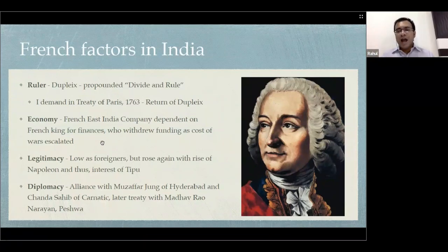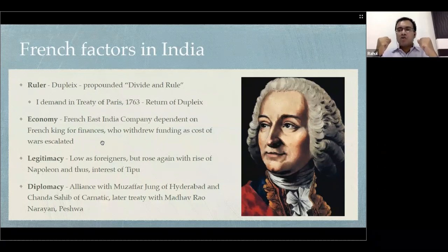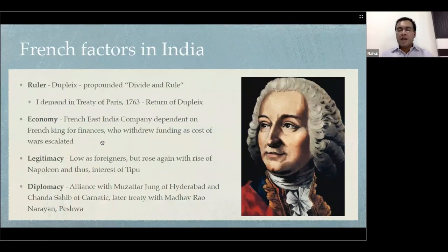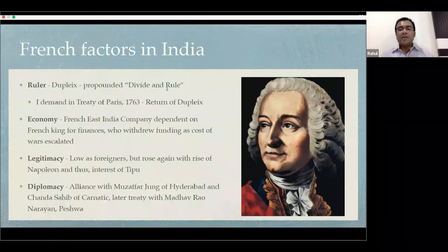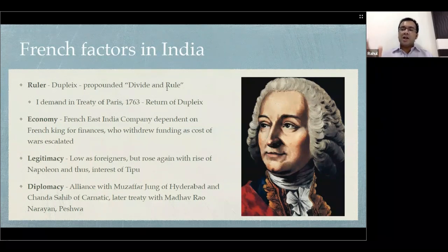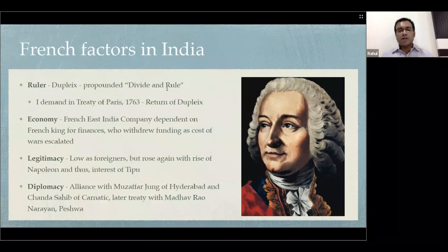As they were foreigners, Indians naturally resisted their rule — it is in the nature of every person not to submit to the rule of an outsider, and you cannot suppress that spirit for long. The legitimacy of the French was very low, so they could not depend on the loyalty of the Indian people as the Mughals had. They understood this clearly from the very start and focused on divide and rule tactics — they knew they would not enjoy the legitimacy that Mughal rulers did.